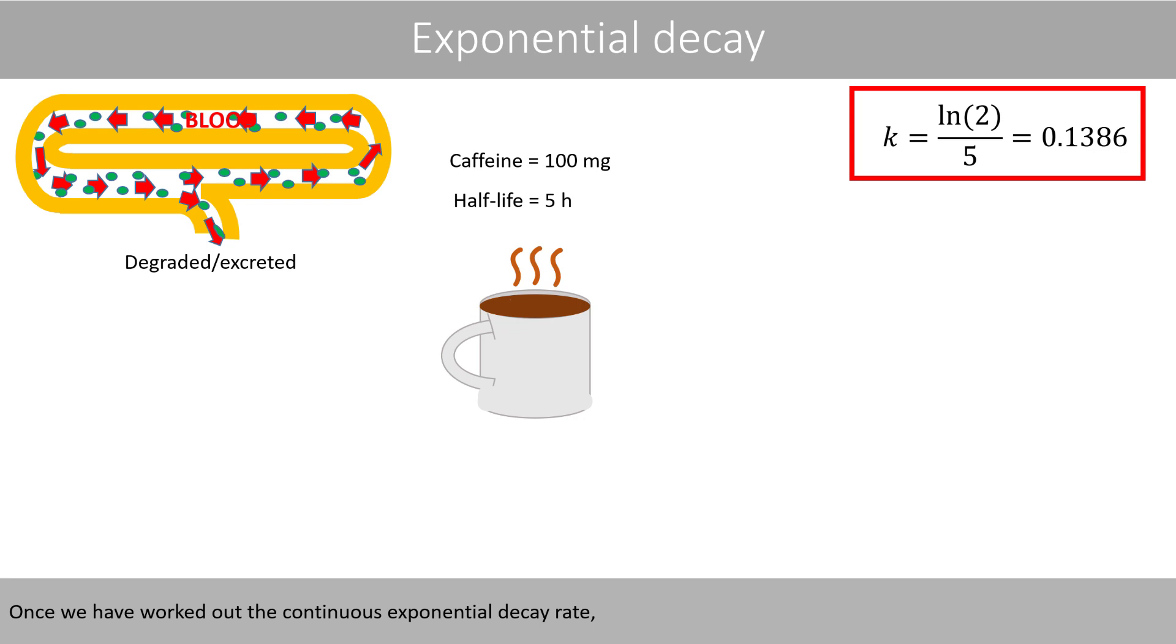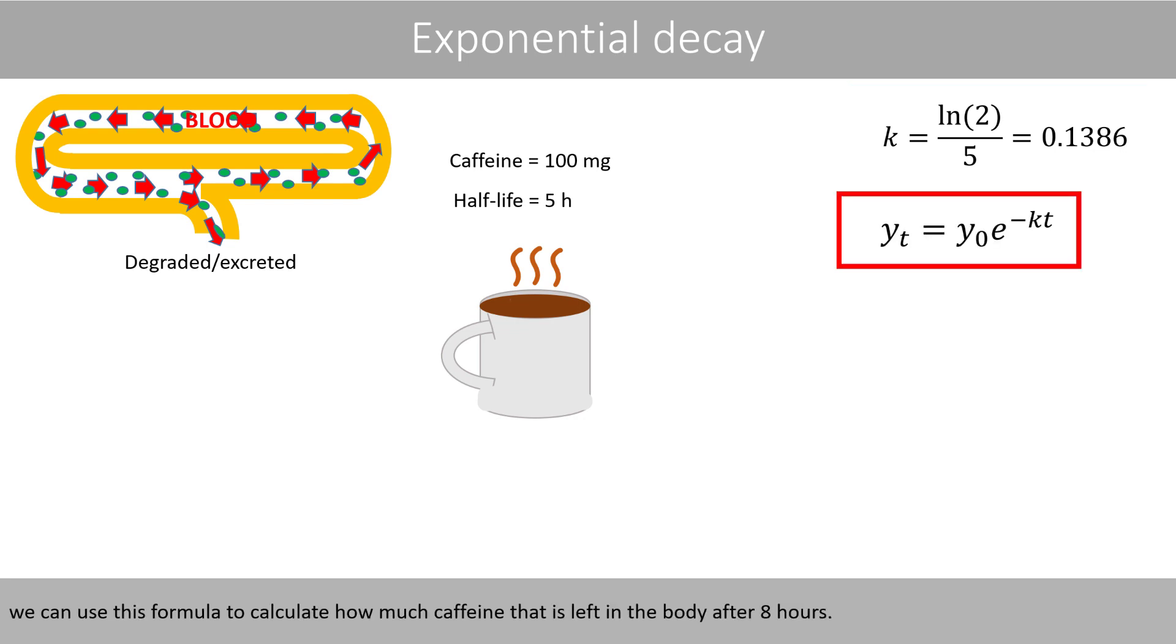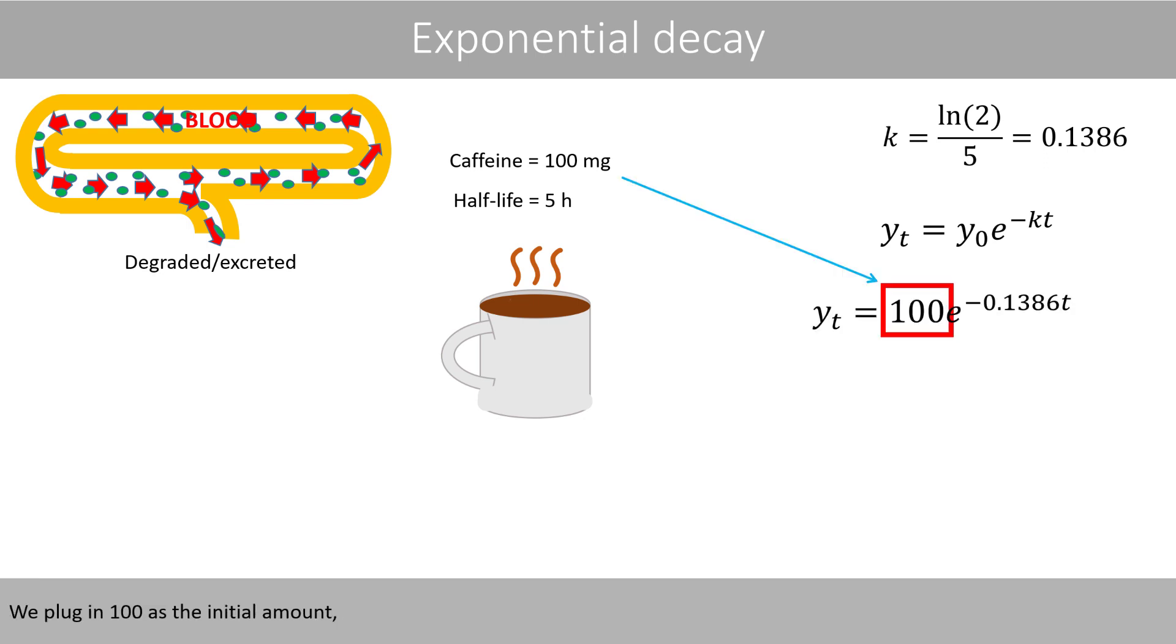Once we have worked out the continuous exponential decay rate, we can use this formula to calculate how much caffeine that is left in the body after 8 hours. We plug in 100 as the initial amount, the value of k, and the fact that we like to calculate the amount of caffeine after 8 hours. If we do the math, we see that we still have about 33 mg of caffeine left in the body after 8 hours.